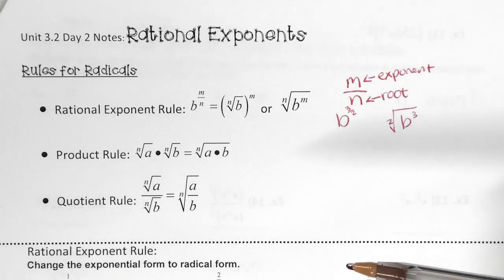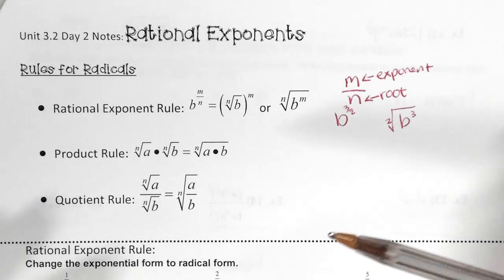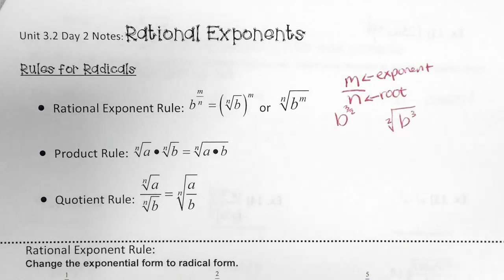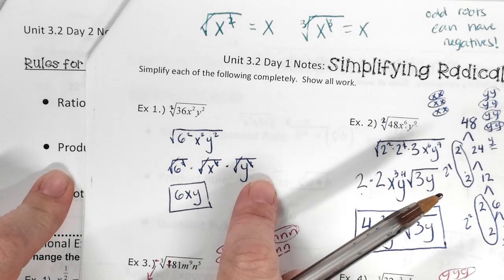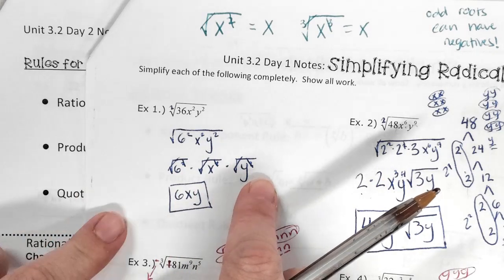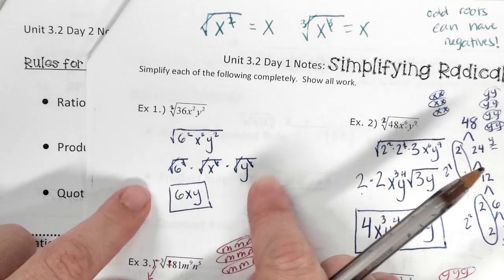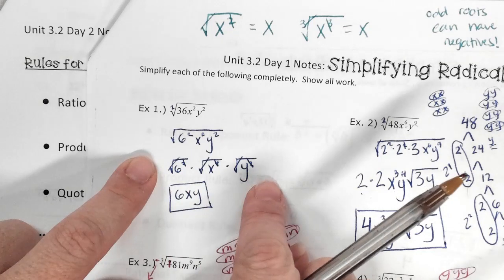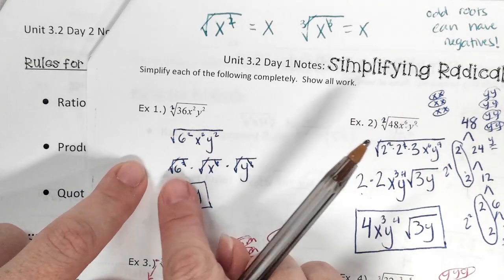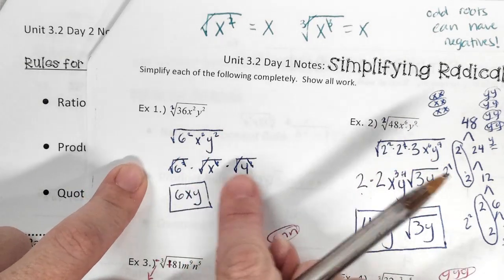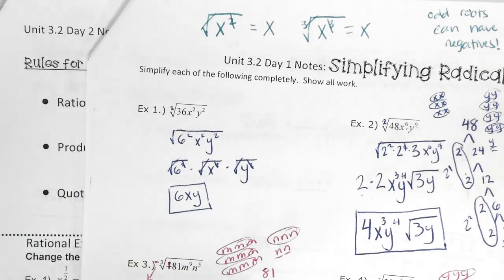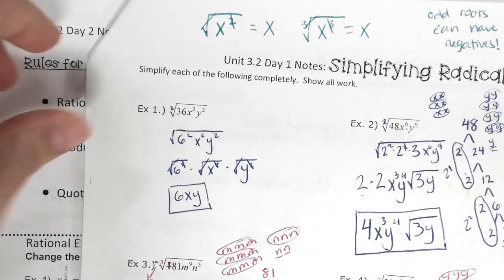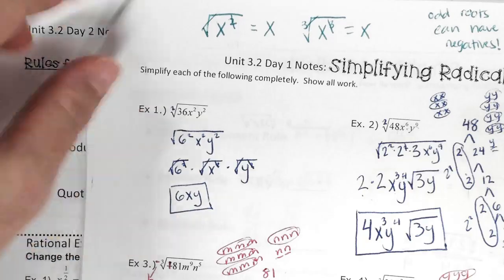Product rule — we actually talked about the product rule yesterday in your notes on number 1. If you look at number 1, didn't we separate it as multiplication? Because they were all square root. So you can also go backwards — if they're separated, you can put them together as long as they have the same root. If one of them is a cube root and one is a square root, you can't put those together because it's not the same root. This only works when the roots match.